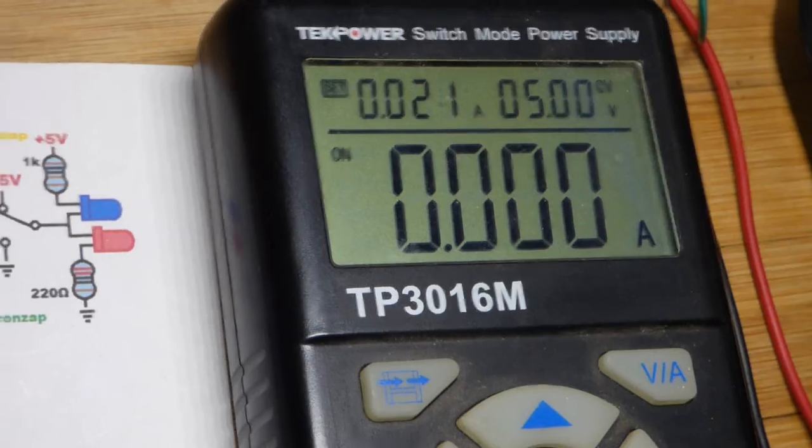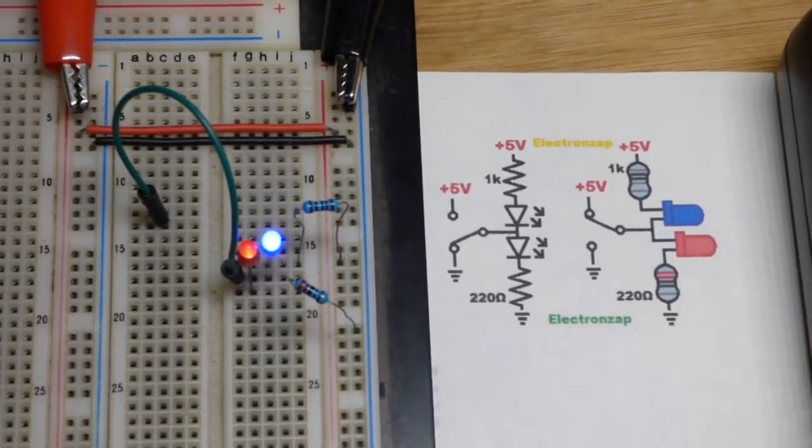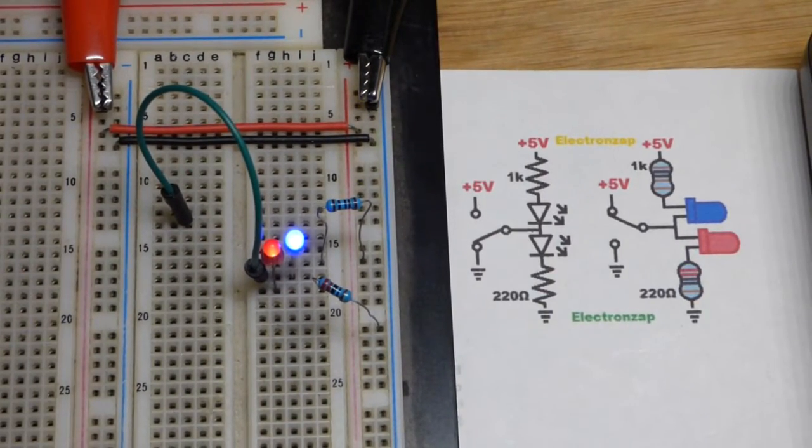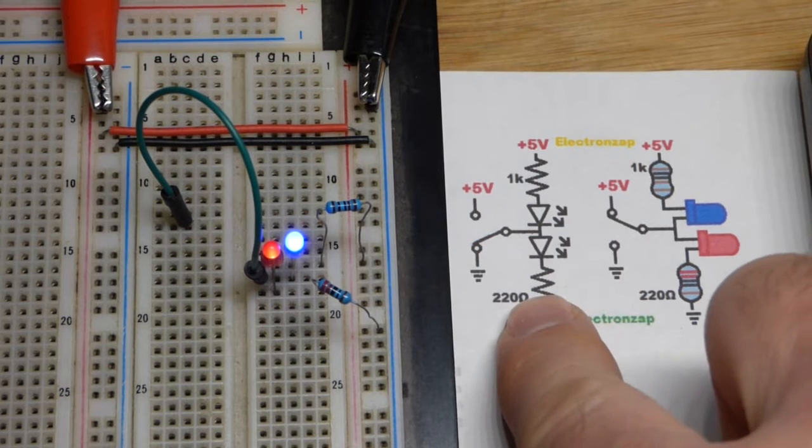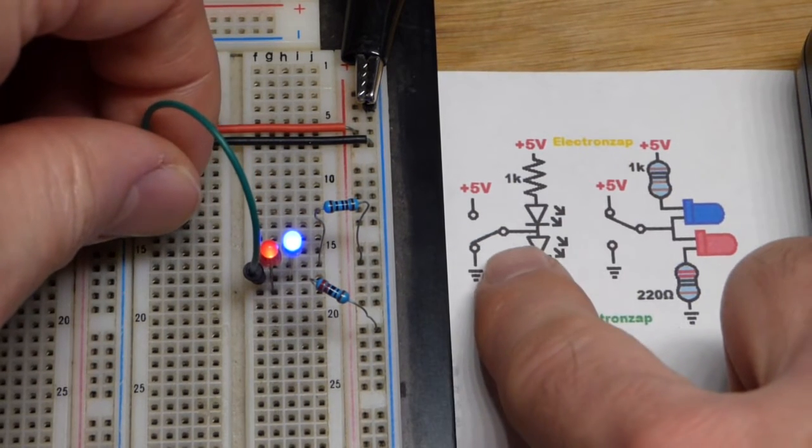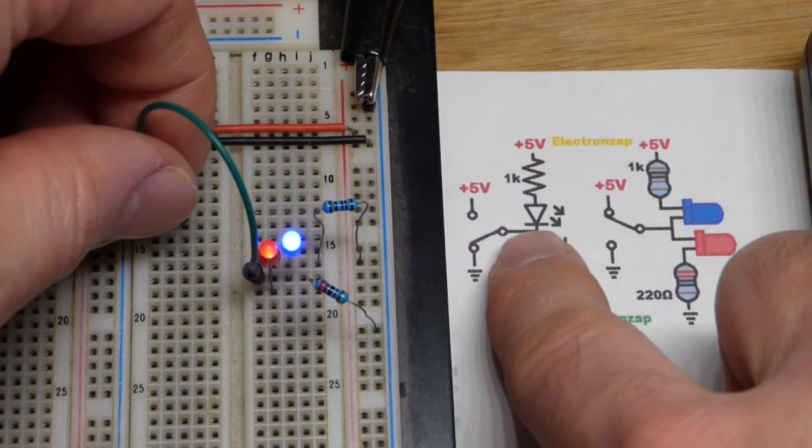So there's no current flowing. Now what we're going to do - first let's go with this one right here. So we're going to sink current with this jumper. You can see at this point here we're going to ground.